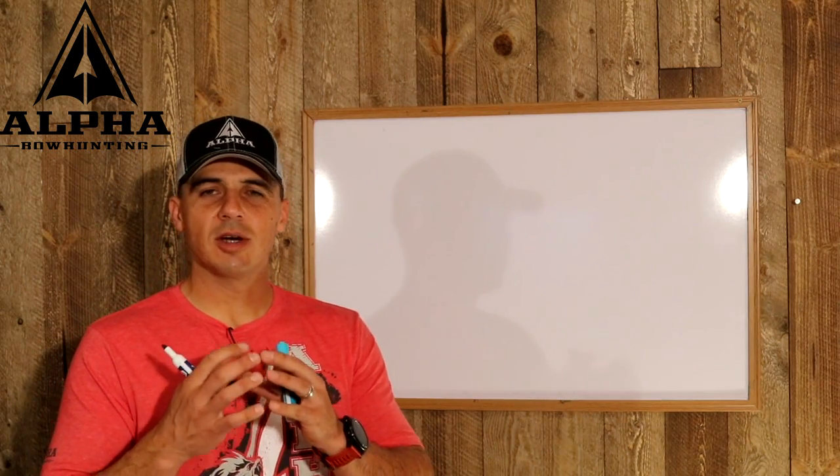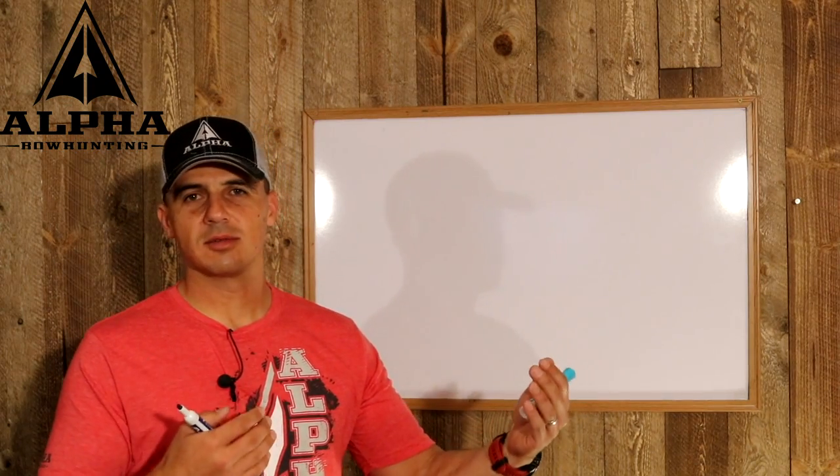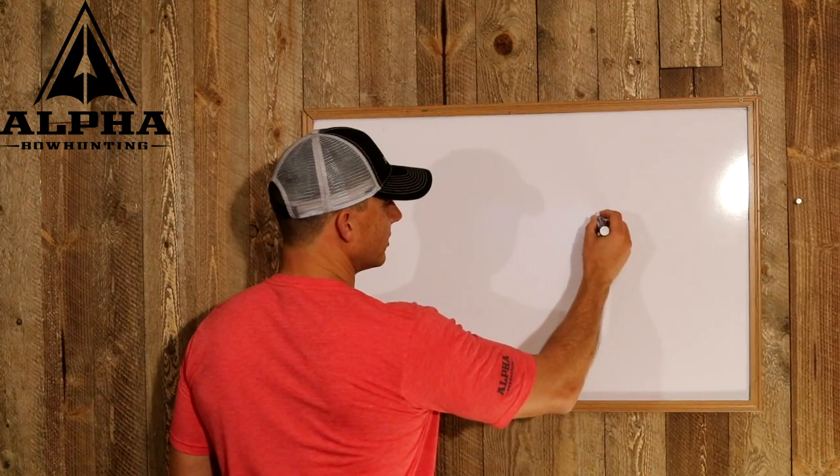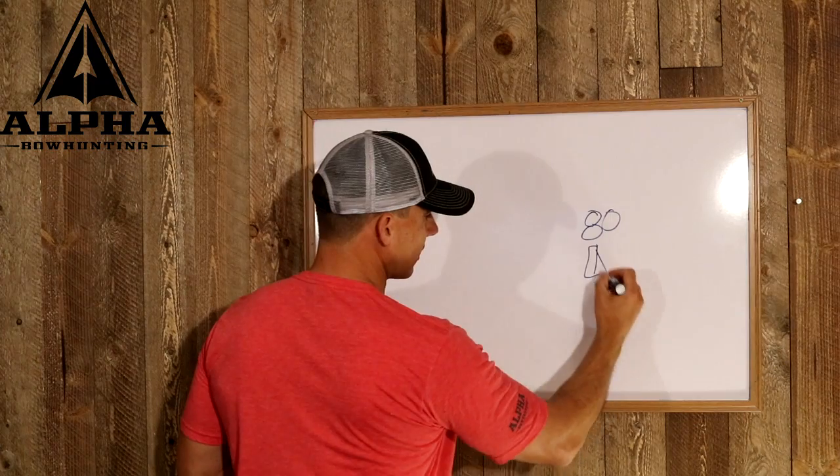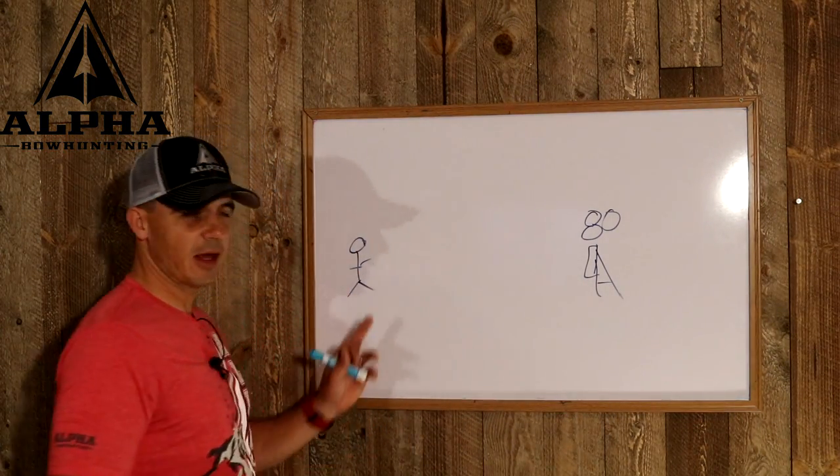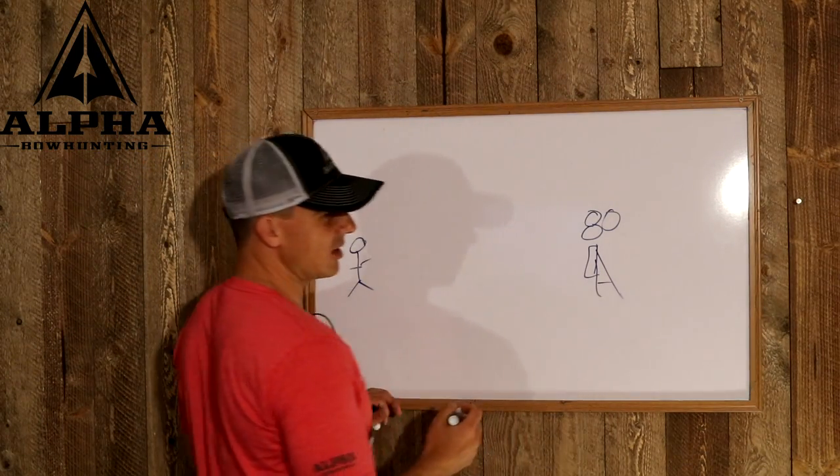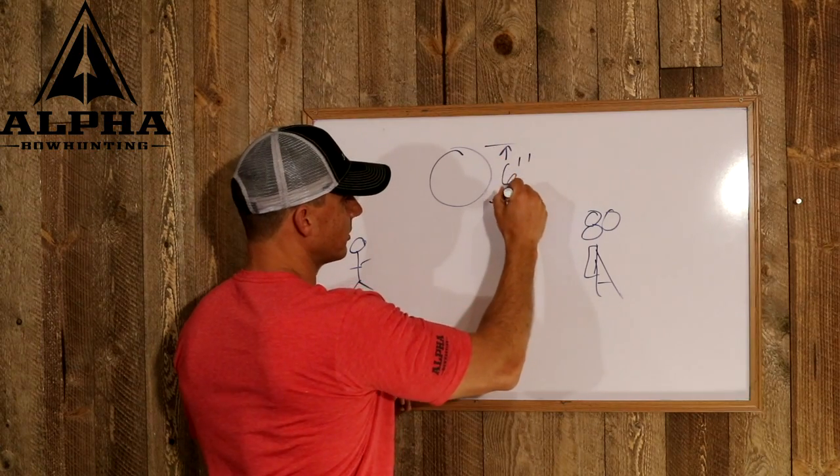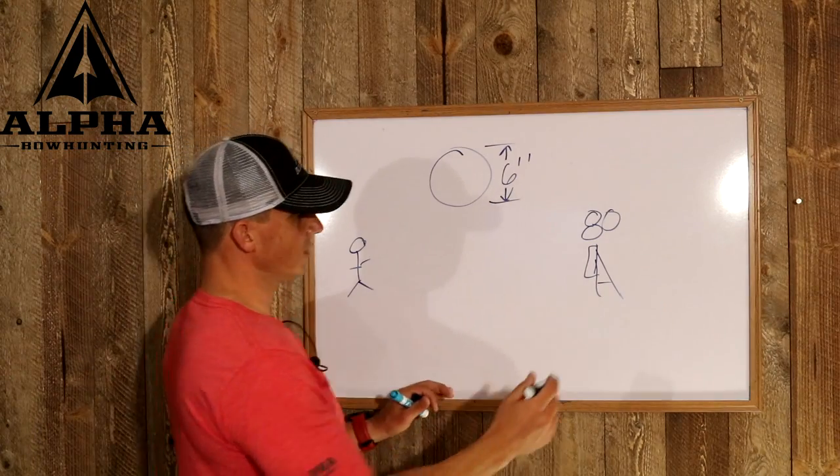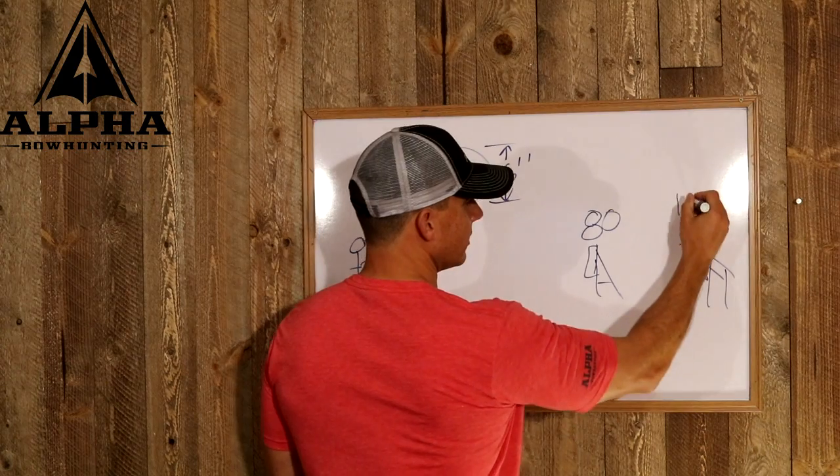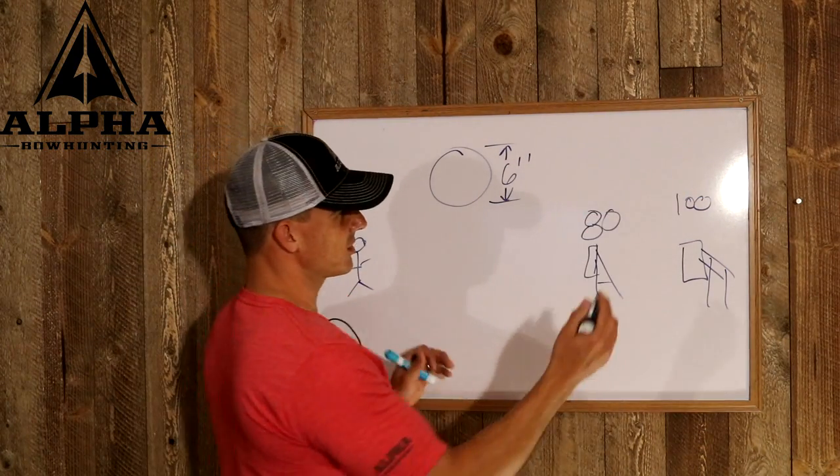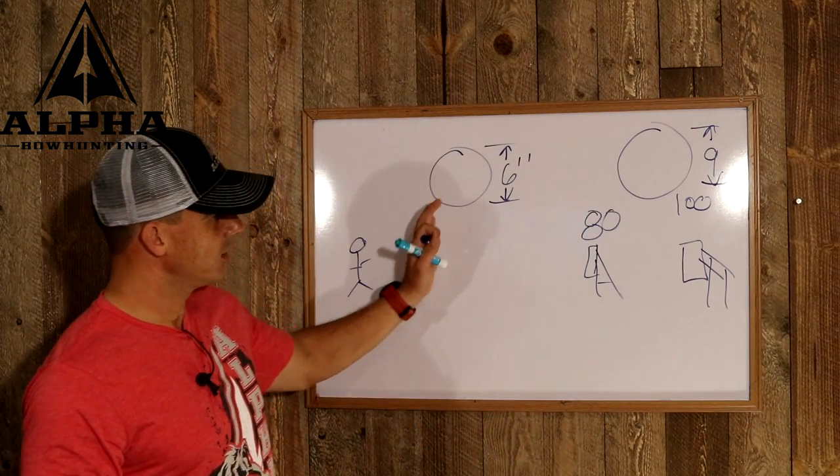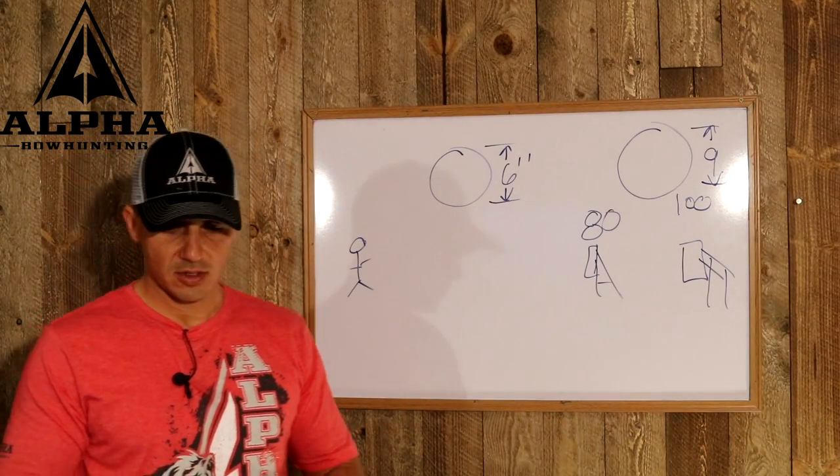First things first, it comes down to understanding your group size at your maximum distance in perfect controlled target shooting situations. If I say that my 80 yard group, let's just say this is a target at 80 yards, and here's me with bow in hand. If my group size at 80 yards happens to be six inches, and as I take it out to a hundred yards, let's just say my group size gets up to nine inches. Understanding what your group size is at different distances is where we start. That's step one.